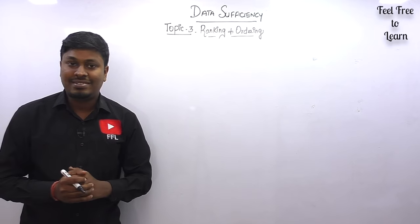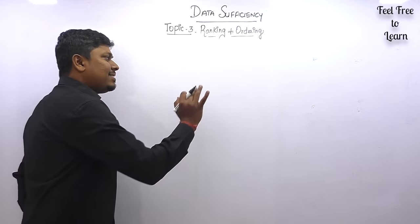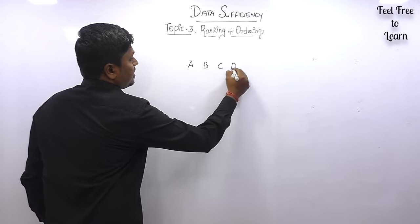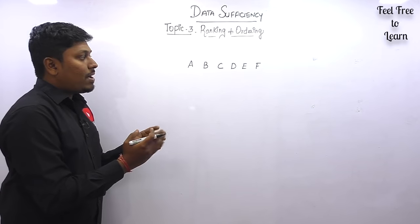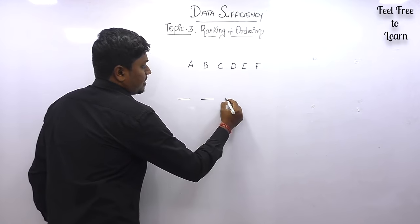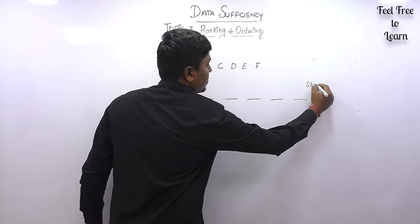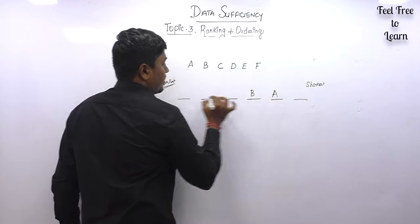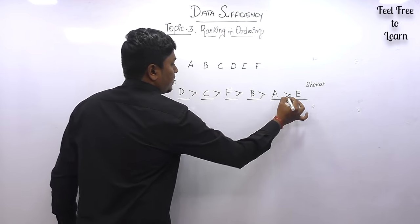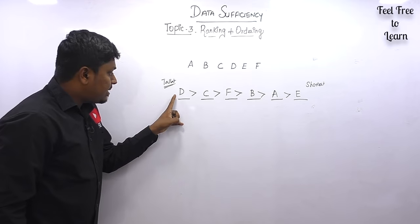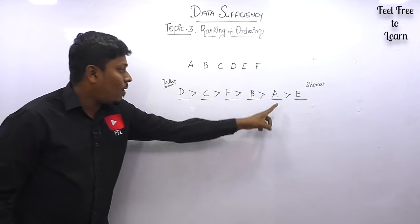Before solving the 12 questions, a simple basic concept is most important in ranking and ordering. For example, think that there are six friends: A, B, C, D, E, F. Some of them are tallest and some are shortest, and our target is to arrange who is tallest and who is shortest. We can arrange them as D, C, F, B, A, E — so D is the tallest person and E is the shortest person.